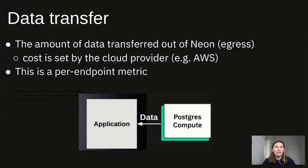The next metric is data transfer. This is the amount of bytes transferred out of the Neon database to the client — outbound traffic only. Data transfer is charged at the cost set by the cloud provider. Currently, Neon is based on AWS, and we have plans to support other cloud providers in the future.